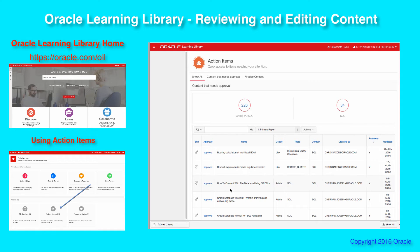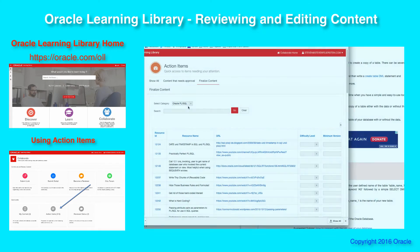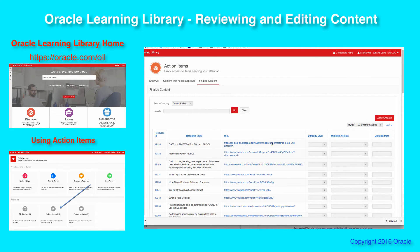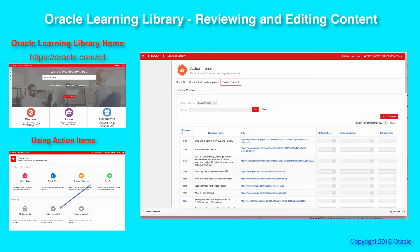So that's Content Needing Approval. In addition, we have a separate report called Finalize Content. This is designed more for very specific pieces of information — in general, what we're doing here is finding all the content items that do not have difficulty level, minimum version, or duration in place. This allows you to very quickly go through a single form. Let's see — 'Write Tiny Chunks of Reusable Code.'